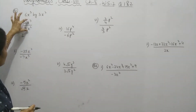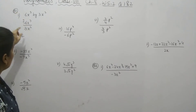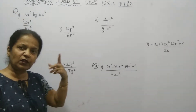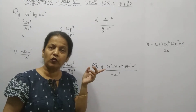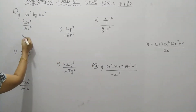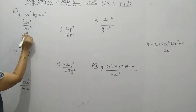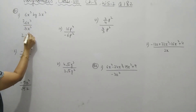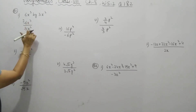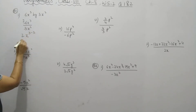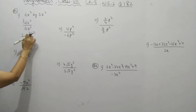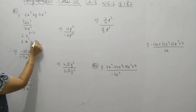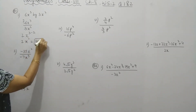And what about these two terms? Observe — bases are same and it is in the division form. So you have to use the exponent concept. It will become x. Bases are same, so you write the base only once and it becomes upper power minus lower power. So 2x power: 3 minus 1 is 1 — no need to write the power of 1.